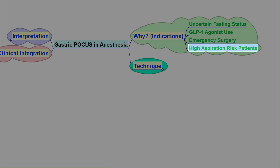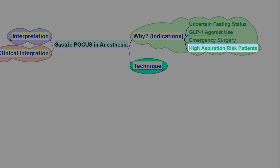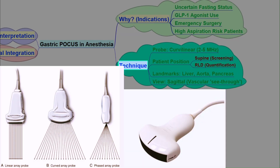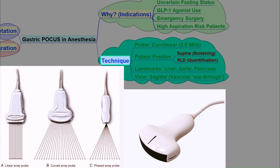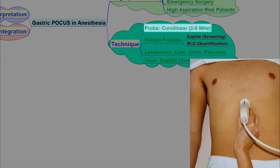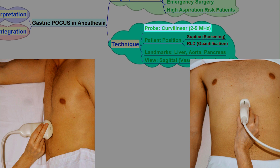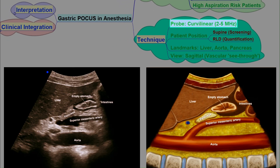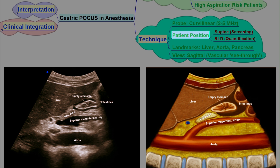So how do we do it? The technique is straightforward and reproducible. We use a curvilinear low-frequency probe, 2 to 5 MHz, to get the depth we need. We place the probe in sagittal or longitudinal orientation over the epigastrum, using the liver and the great vessels like the aorta as our acoustic windows — what we call the vascular see-through view.